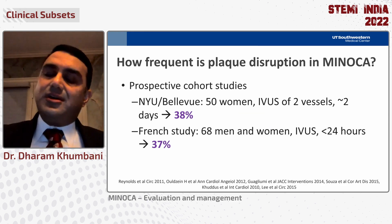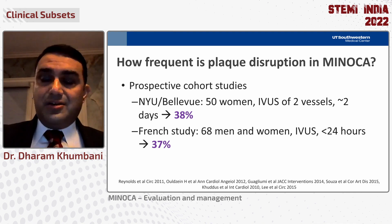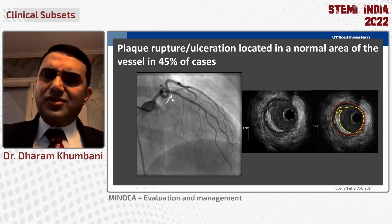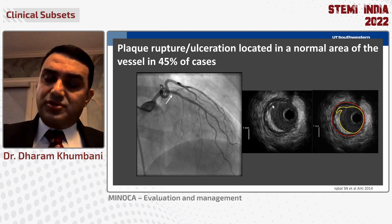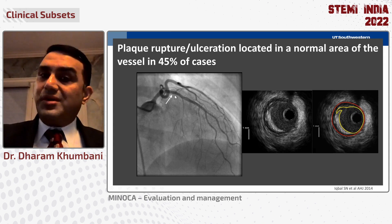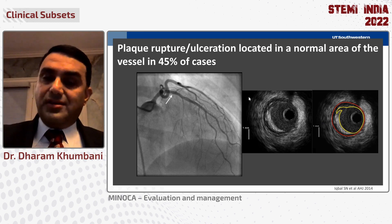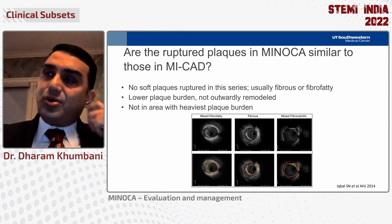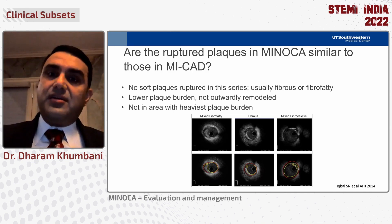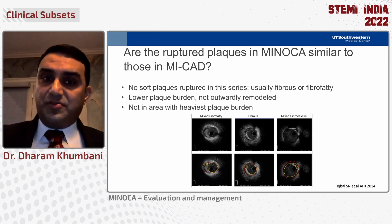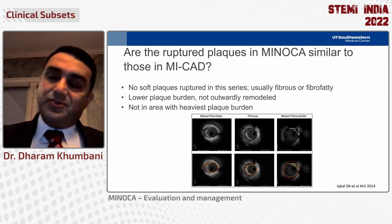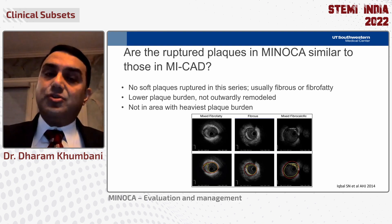IVUS studies suggest that the incidence of angiographically occult plaque rupture may be as high as 30%. Interestingly, the area of plaque rupture can actually be in a completely normal angiographic segment. These are not typical lipid-rich plaques — they are fibrous or fibrofatty plaques, and they're not typically in areas with high plaque burden. This is a very different issue and really requires knowledge of this to be looking for it.